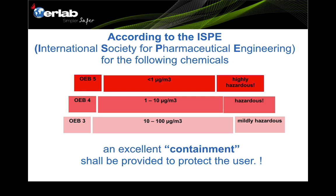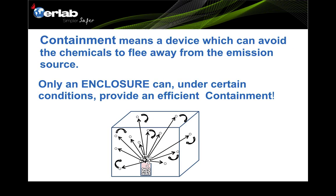According to ISPE, the International Society of Pharmaceutical Engineering, any OEB greater than 3 — meaning OEB 4, 5, and 6 — requires an enclosure and containment to provide protection to the user while doing measurements. Containment means a device which can prevent the chemical powder from freely escaping from the emission source. Only an enclosure can, under certain conditions, provide efficient containment to protect the user.